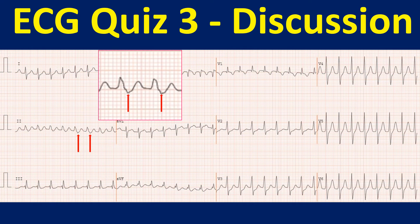Close scrutiny of the tracing shows probable negative P waves after the QRS complex in lead II, marked by a red arrow. These are called pseudo S waves, produced by retrograde P waves.